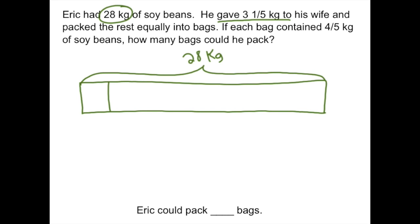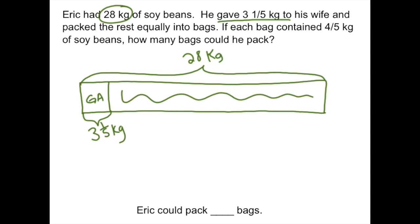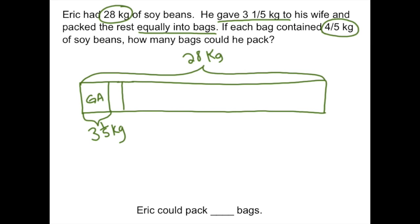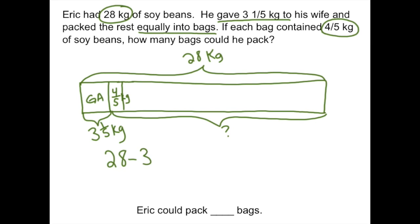We know that he gave three and one-fifth kilograms to his wife, so we're going to break off a little piece here labeled 'gave away' — three and one-fifth kilograms. It then says he packed the rest equally into bags. We're told that four-fifths kilograms was packed into each one of those bags. We're going to see how many groups of four-fifths we can fit in the leftover part of our bar. First, we need to figure out what's left over by doing 28 minus three and one-fifth.